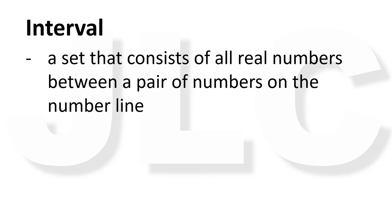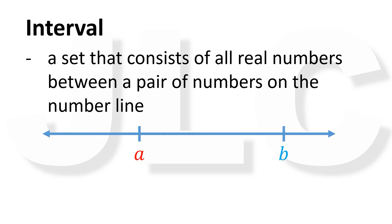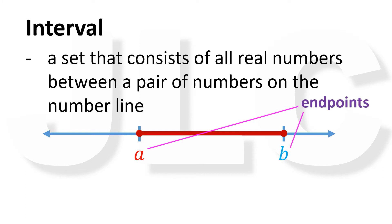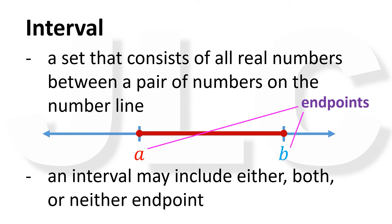Now let's talk about intervals. An interval is also a set, and it is a set that consists of all real numbers between a pair of numbers on the number line, or real line. If there are two points on the real line A and B, where A is less than B, then the set of all numbers between A and B is an interval. A and B are called endpoints. An interval may include either, both, or neither endpoint.